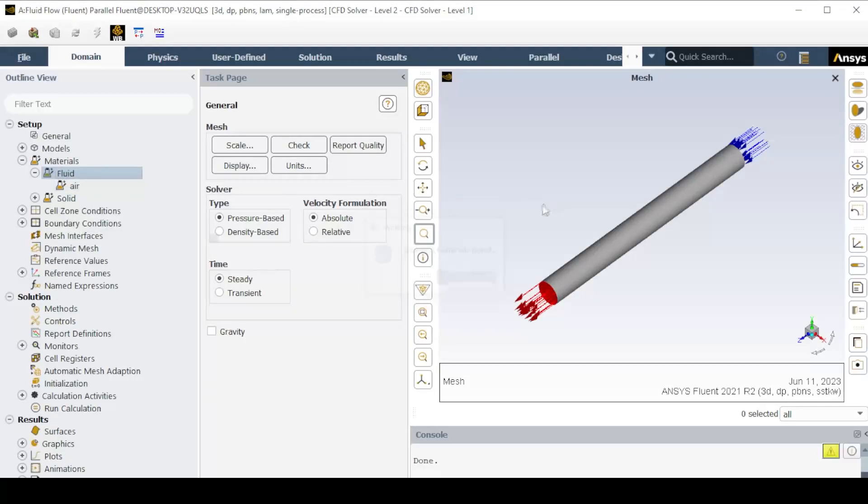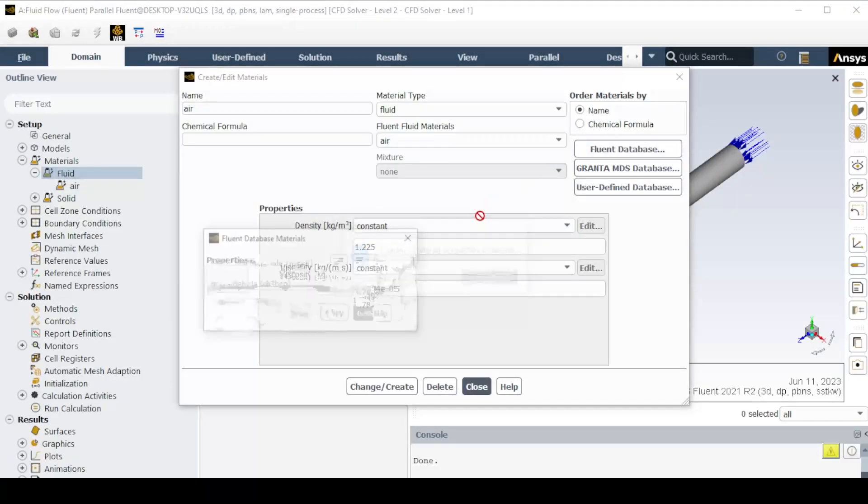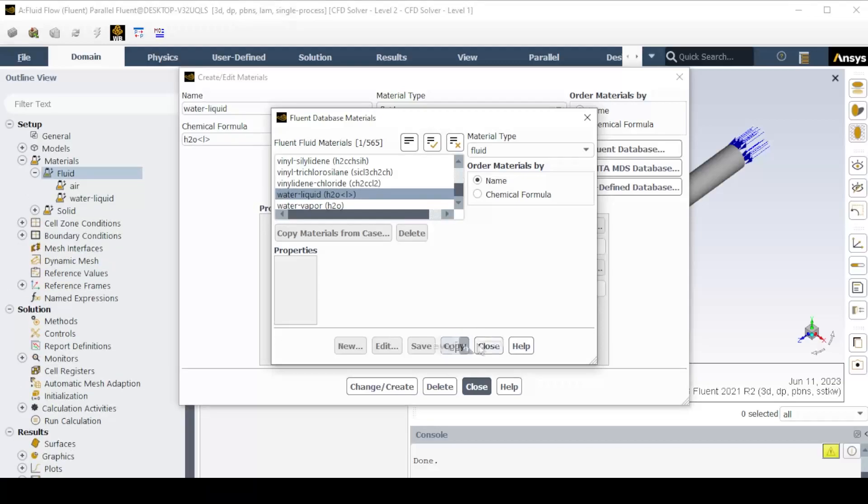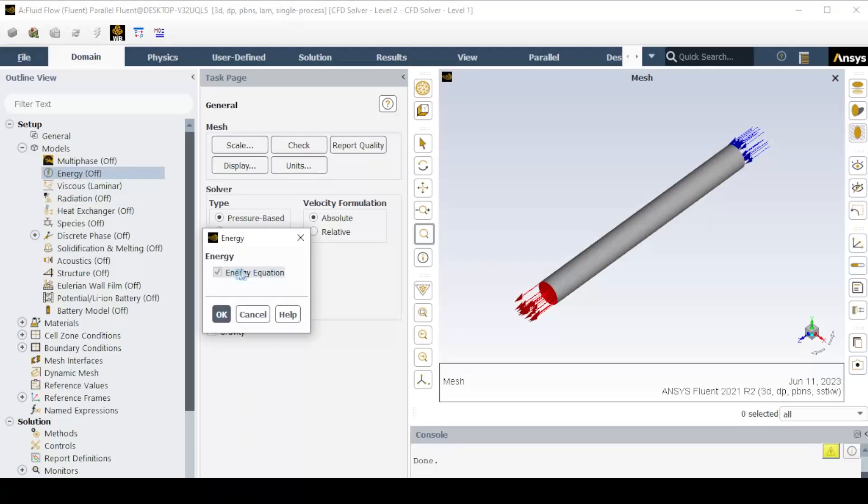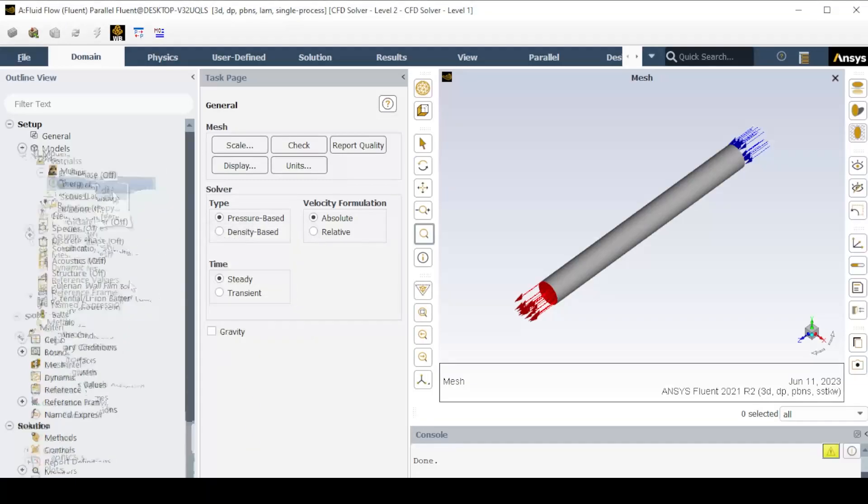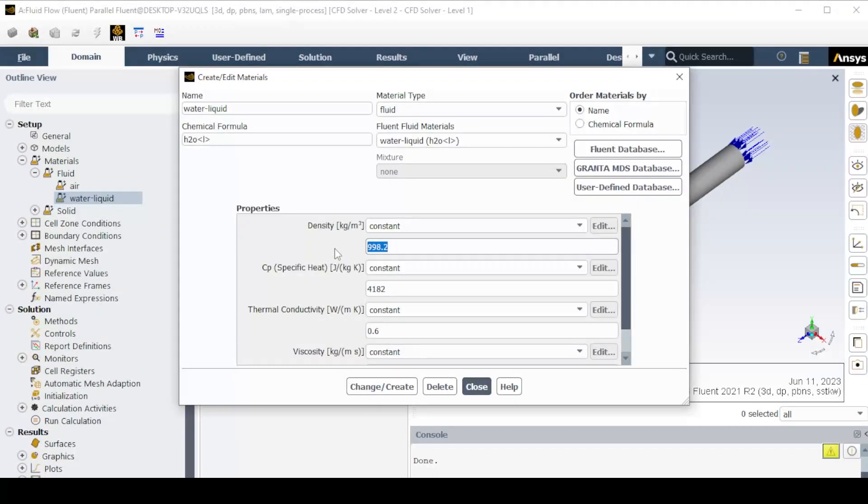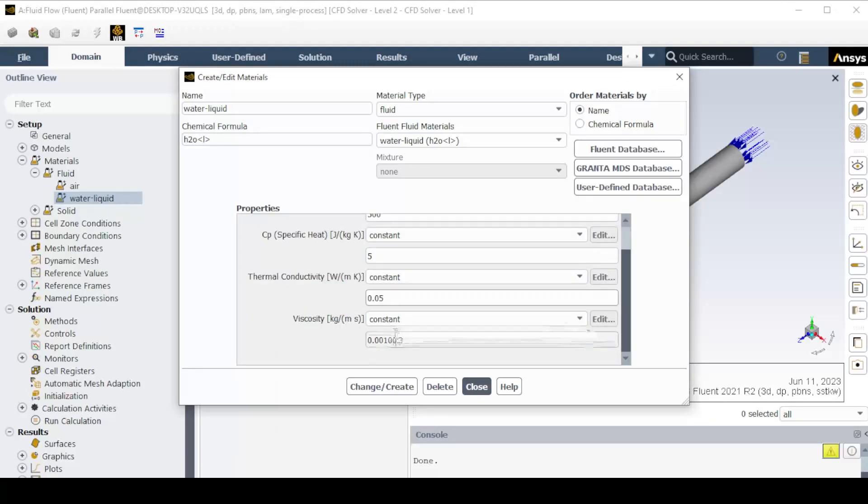In Fluid Section, add water liquid from Fluent Database. And before editing the material properties, turn on energy. Edit material properties as per the given problem. For this problem, we assumed fluid properties to be constant and evaluated at bulk mean temperature. But the properties will vary with temperature, which also can be modeled using appropriate function in properties. We will cover this in a future tutorial.